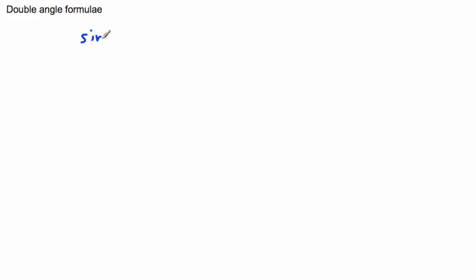We have double angle formulas that are going to help us deal with some neat situations. We have something called the sine double angle formula. So instead of saying sine of theta, we're going to say sine of two theta. It turns out this one is really nice and straightforward: it's just two sine theta cos theta.